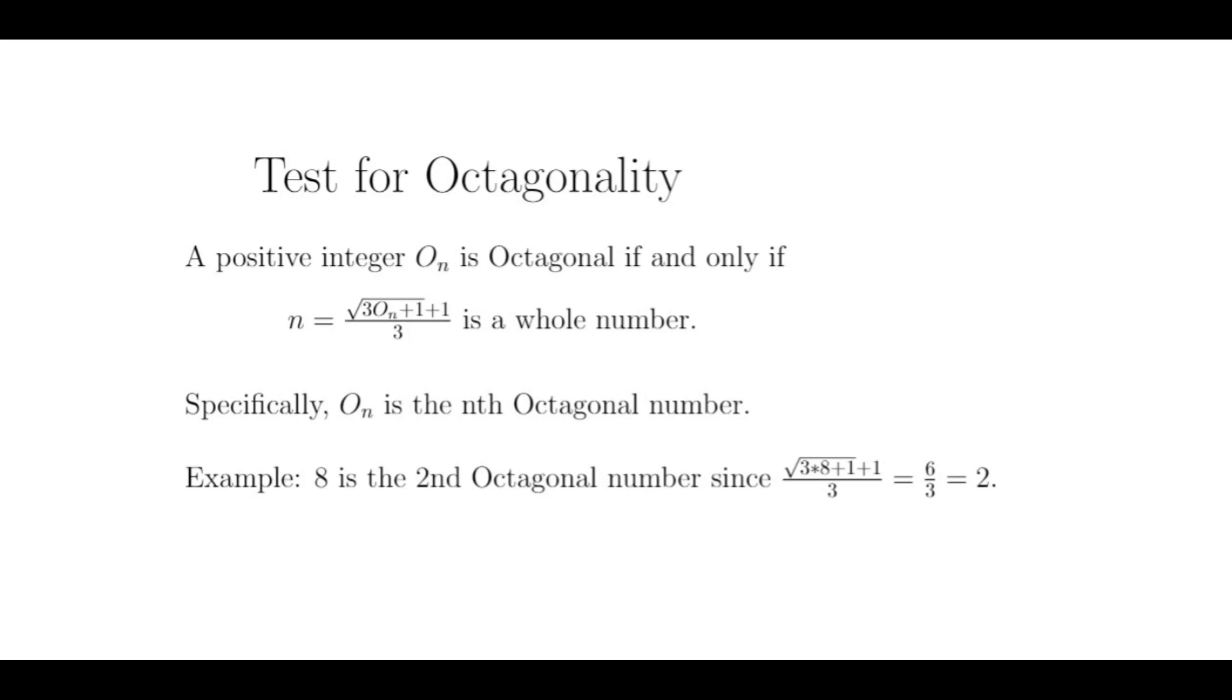Like many other figurate numbers, we do have a test for octagonality. A positive integer O sub n is the nth octagonal number if and only if n equals root 3 times O sub n plus 1 plus 1 all divided by 3 is a whole number.